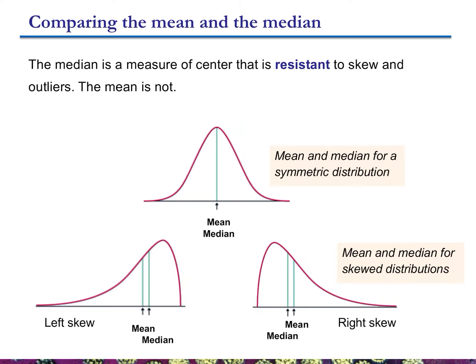In calculating the mean, the value of each data point is factored into the calculation, so extreme data points pull the mean in their direction. For the median, you're just identifying the middle number in a data set — it doesn't care what the values of individual data points are. So the median is not mathematically affected by skew or outliers. That means if you have a skewed data set, the median is probably going to be a better, more accurate representation of the central tendency. However, if you have a symmetrical distribution, the mean is always what you want to use.